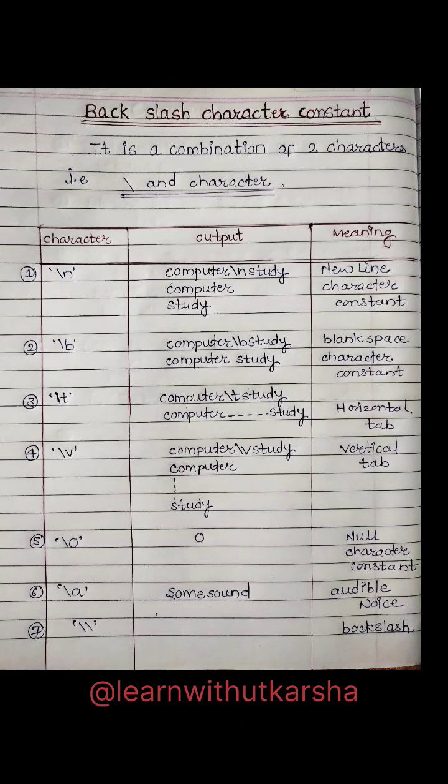Backslash Character Constant is basically a combination of two characters — backslash and a character. Let's see them one by one.